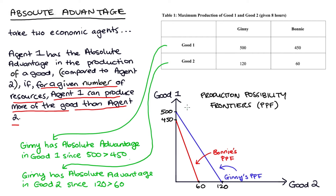The vertical axis intercept — given that our vertical axis tracks good one — tells us the most that Ginny can make of good one when she's not making any of good two. That amount is equal to 500, and we can get that from the table. That's going to be Ginny's vertical axis intercept. Ginny's horizontal axis intercept, given that our horizontal axis tracks the amount of good two being produced, is 120 — the maximum amount of good two she can make if she only spends her time on good two, at which point the amount of good one she's making is zero.